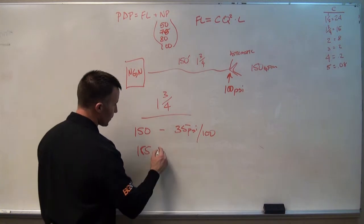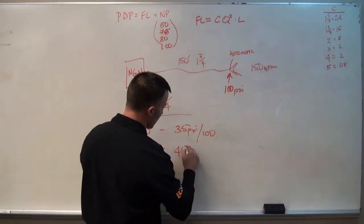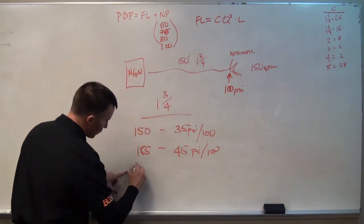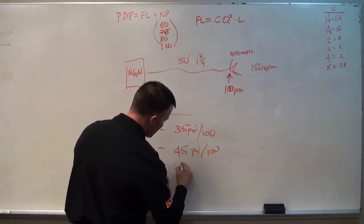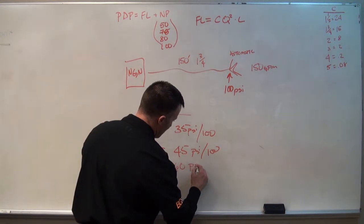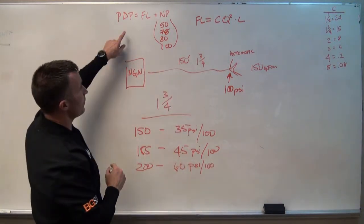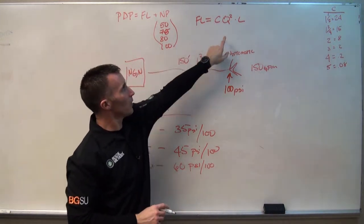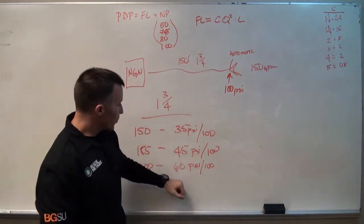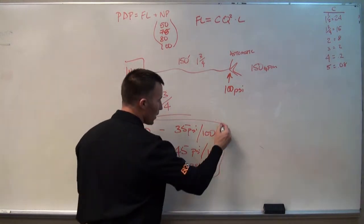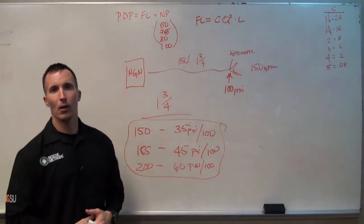At 185 gallons a minute, we end up with about 45 PSI per 100 feet. And at 200 gallons a minute, we end up at about 60 PSI per 100 feet, utilizing the same equation, CQ squared times L. So these become constants and a quick way for us to do friction loss on the street.